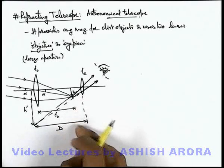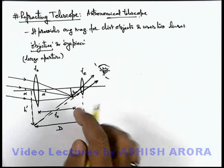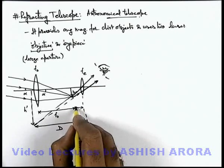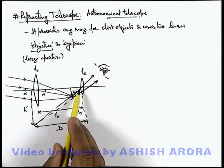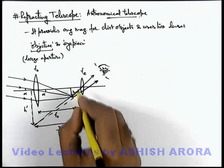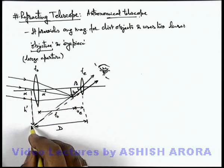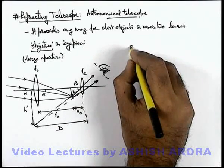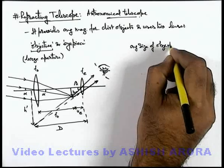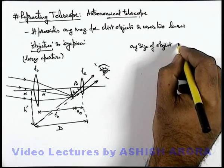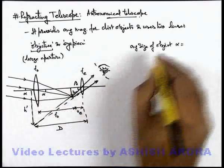In this situation, if this distance of intermediate image is u_e from the eyepiece lens, then this angle beta we can consider as the angular size of image produced. So here we can write: angular size of object in this situation as alpha, and the value of alpha we can write as h over f_o.